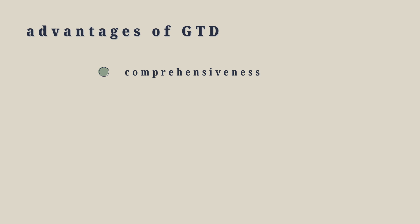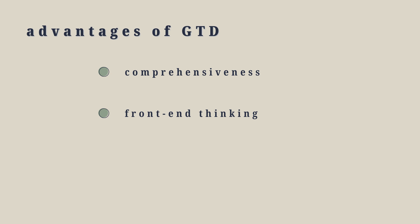Since adopting this system, I've experienced a few key advantages over other productivity methods. First, its comprehensiveness — GTD allows me to capture everything, from quick tasks to massive projects, freeing my mind to focus on the present moment. Second, the emphasis on front-end thinking. By defining my intentions and goals upfront, I gain clarity about why I'm doing something and what exactly needs to be done, making decisions on what, when, and how to do things much easier.